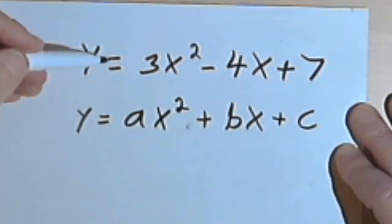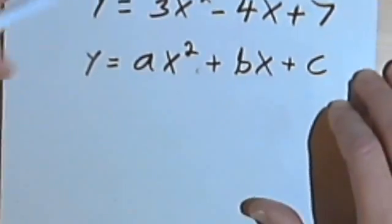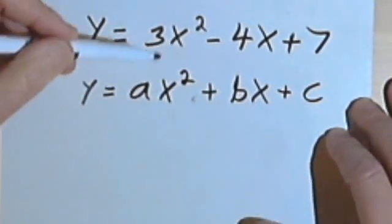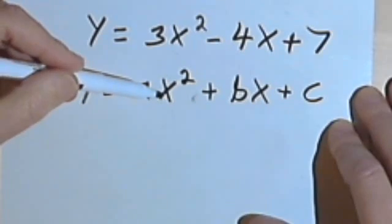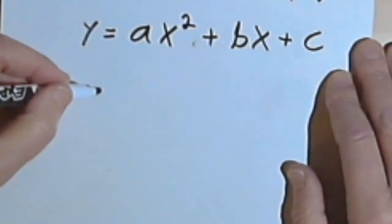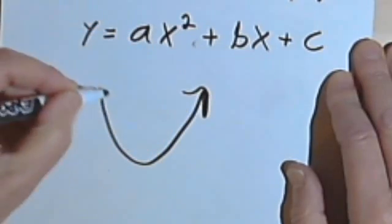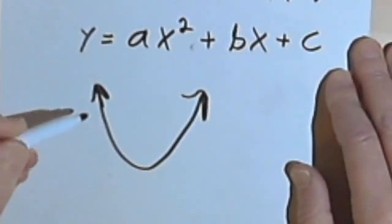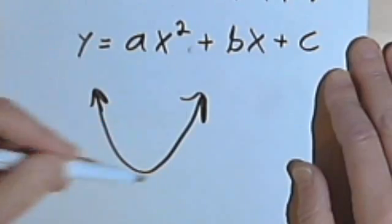The other nice thing that you can see just by looking at the equation is if the a, the coefficient for the x squared, if that's a positive number, your graph will open upward. Both ends of the graph will be moving upward, you'll have a smile.